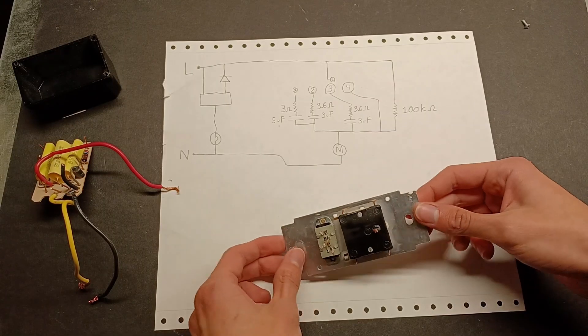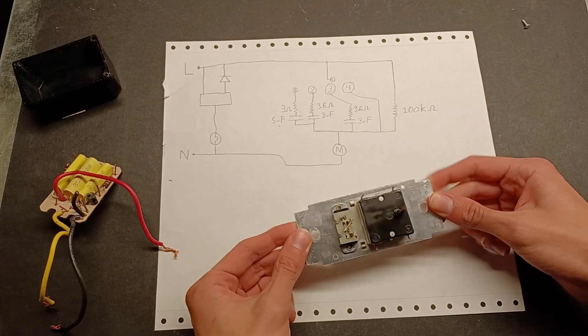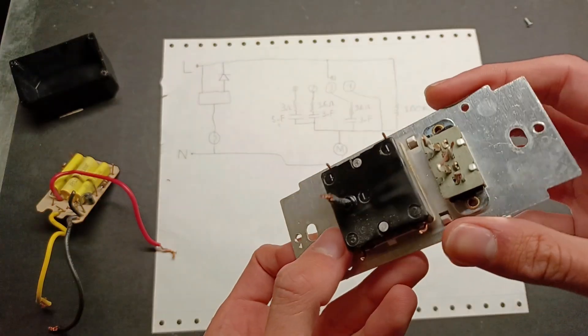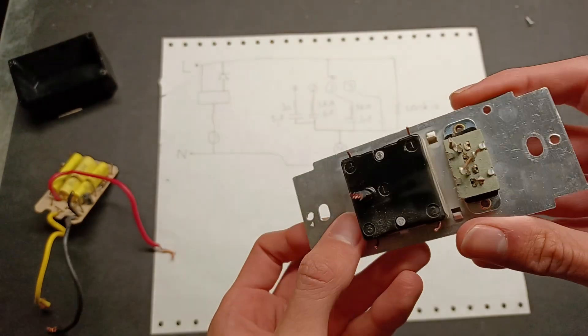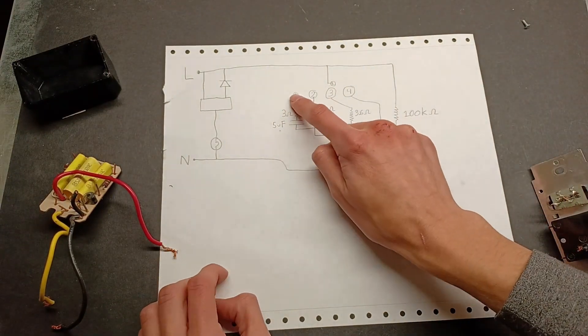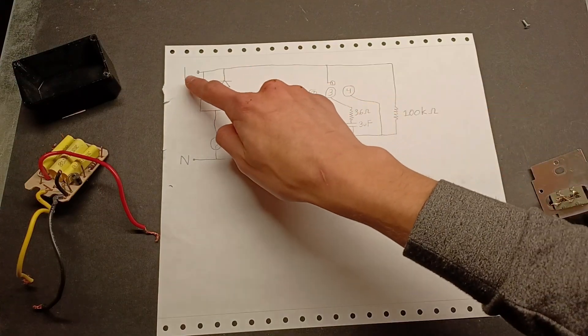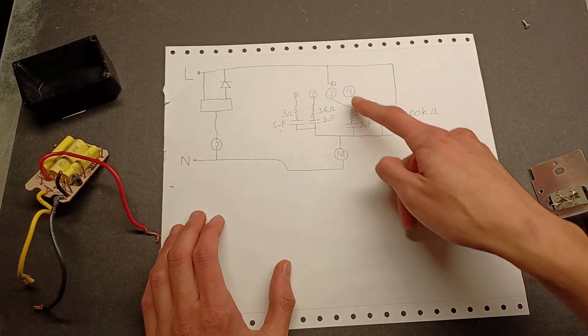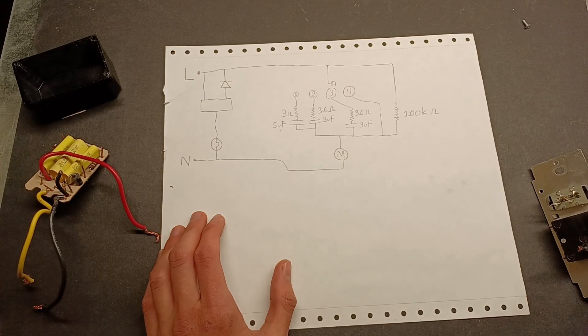I made a schematic of this fan control switch, and it is more interesting than I initially thought it was. The switch itself has markings on it L, 1, 2, 3, and 4, and it corresponds with these numbers on the schematic. The L terminal on the switch is connected to the mains live wire going into the switch. It then goes out to this 1, 2, 3, and 4 terminal on the schematic.